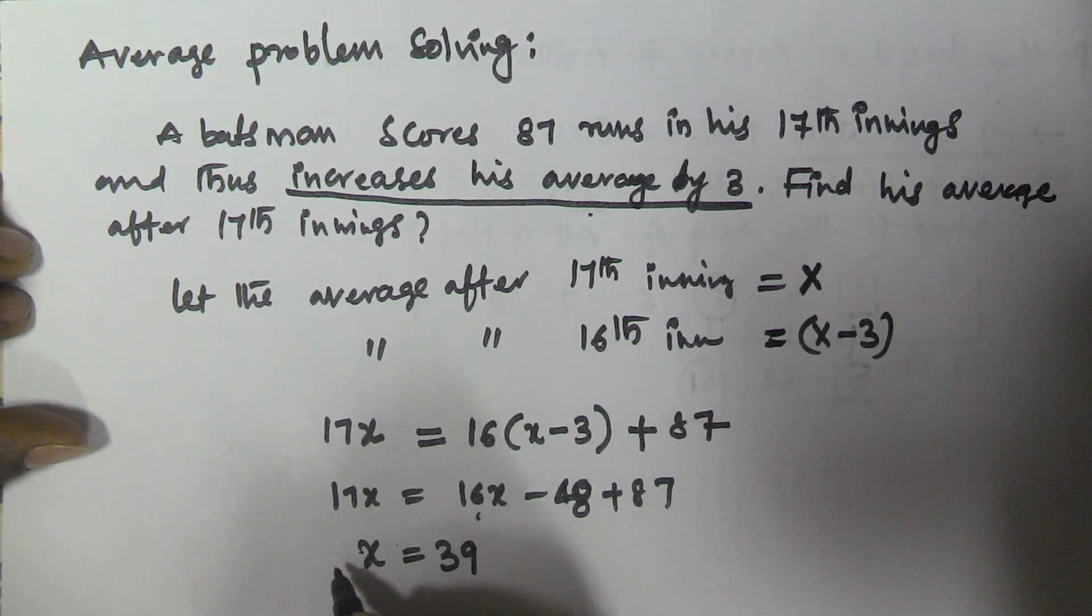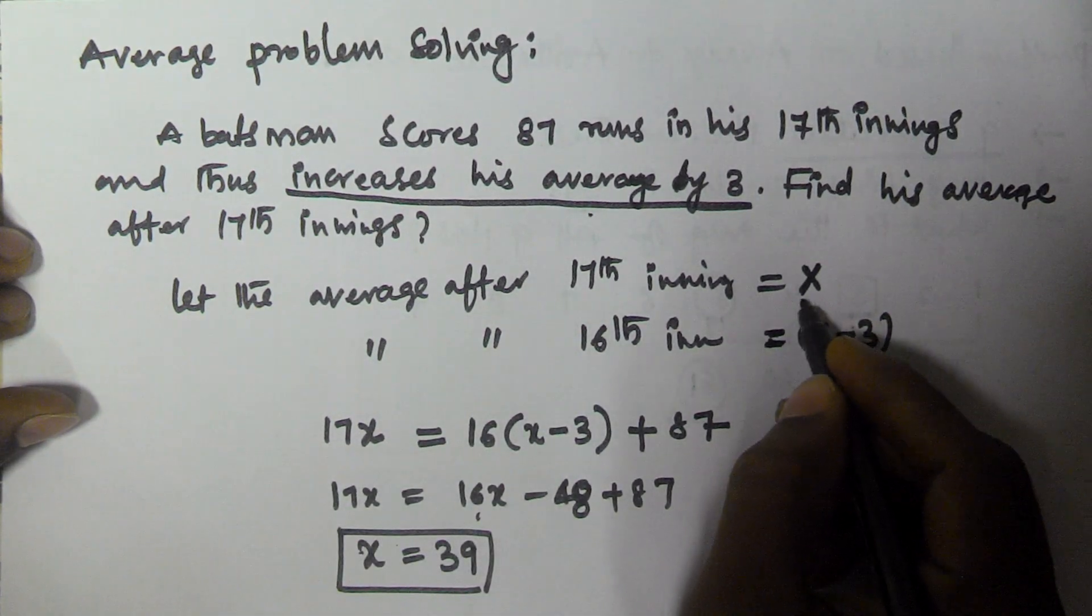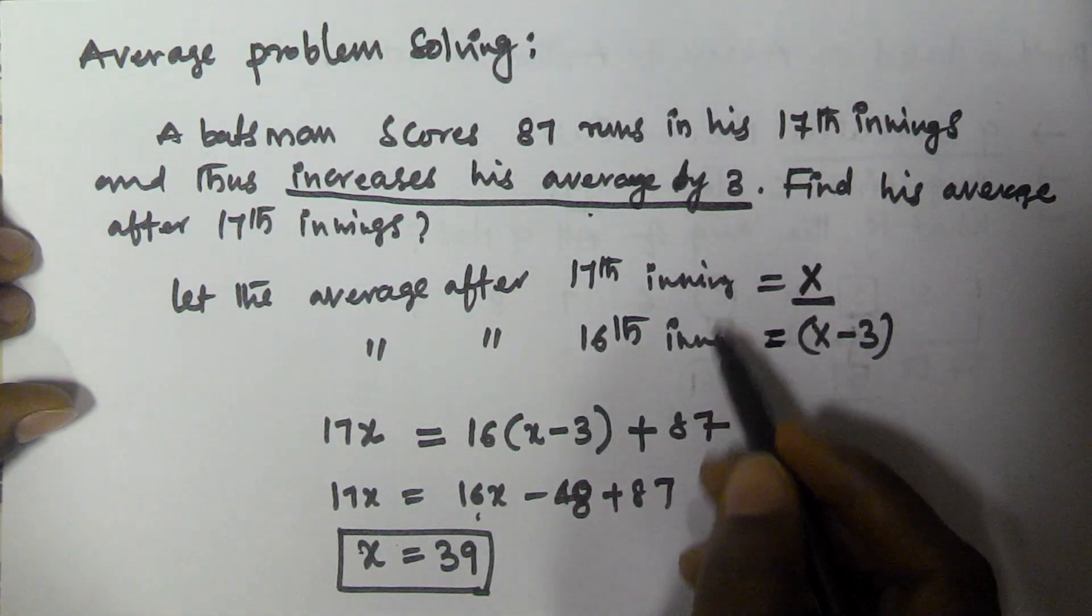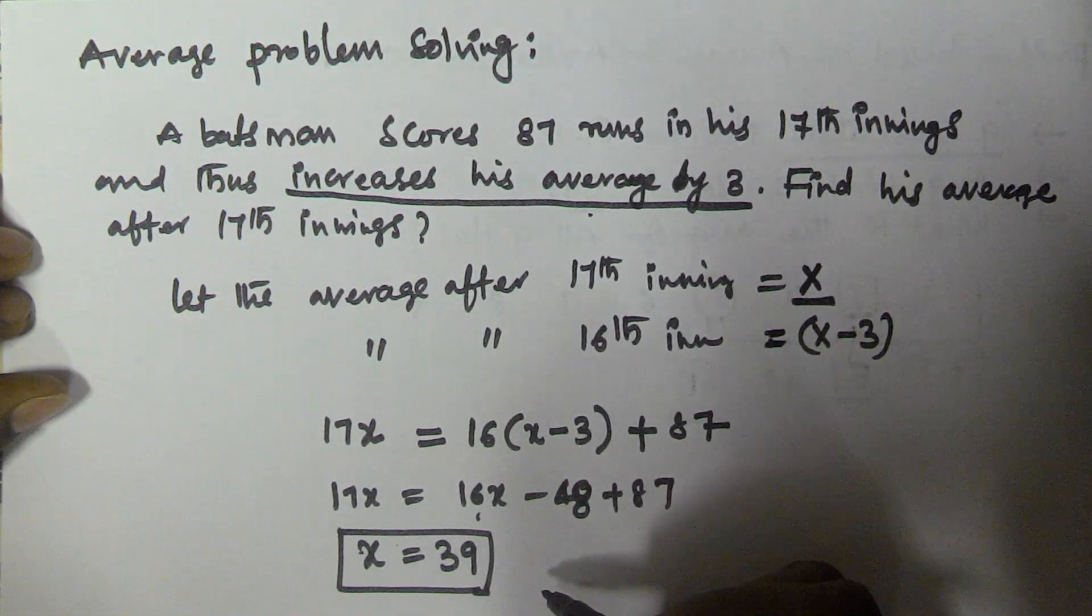So x is the average after 17th innings. The average of the batsman after 17th innings is 39.